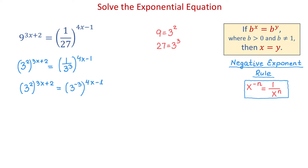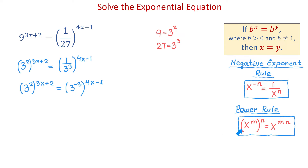In the next step, we will use the power rule for exponents. The power rule tells us that if we have an exponential expression x to the m power and we raise it to another exponent n, then these two exponents will multiply. According to this property, on the left side we will multiply 2 by 3x plus 2, and on the right side we will multiply negative 3 by 4x minus 1. Then we will have 3 to the 2 times 3x plus 2 equals 3 to the negative 3 times 4x minus 1.